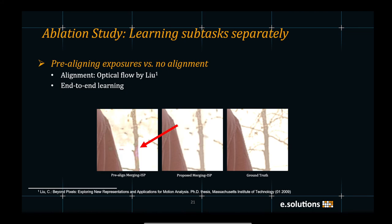To extend the ablation study, we also test the same architecture with a pre-aligned version with optical flow. It is interesting to know that the pre-alignment can cause errors that are difficult to compensate in the subsequent ISP stages as shown in the figure on the left. In contrast, handling exposure alignment in conjunction with low-level and high-level vision by the proposed method mitigates error accumulation and generates high-quality results.